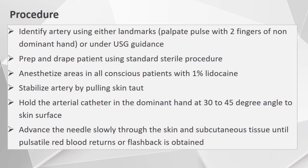After positioning, we identify the artery using either landmark technique — palpating the pulse with two fingers — or under ultrasound guidance. We prep and drape the patient using a standard sterile procedure. We give local anesthesia with 1% lidocaine in all conscious patients. We stabilize the artery by pulling the skin taut and hold the arterial catheter in the dominant hand at a 30 to 45 degree angle to the skin surface, advancing the needle slowly through the skin and subcutaneous tissue until pulsatile red blood returns as a flashback.